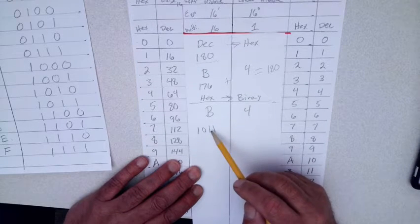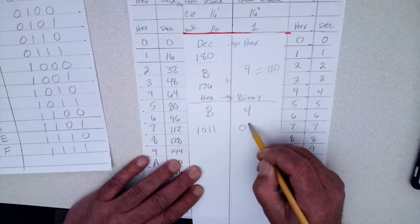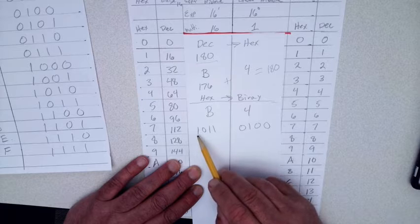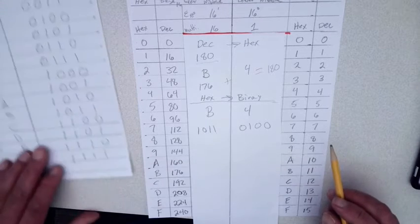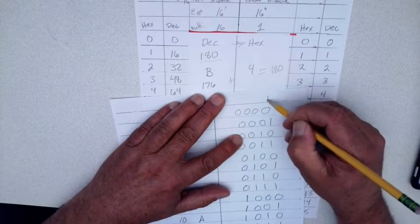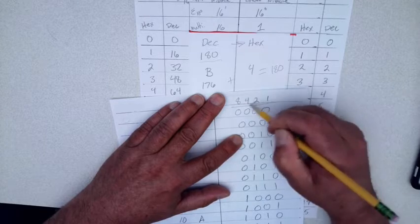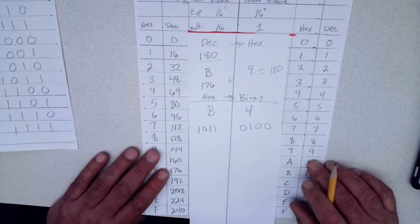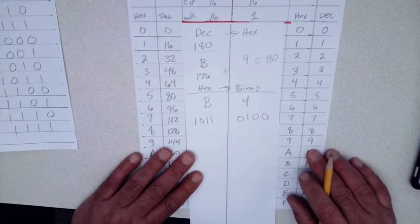The other nibble is four — that's zero for the eight, one, zero, zero. The upper nibble 1011 is made up of eight plus two plus one, which is 11. Remembering our binary chart: this column is one, this is two, this is four, and this is eight — that's what our columns represent. And that is hex to binary.